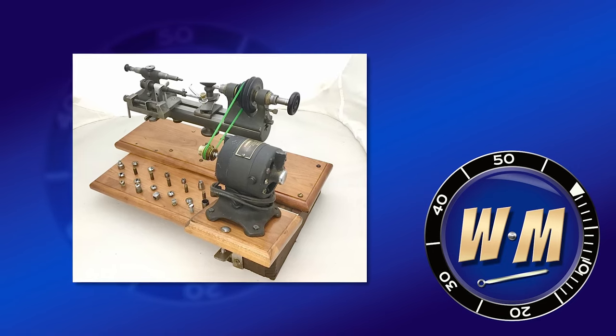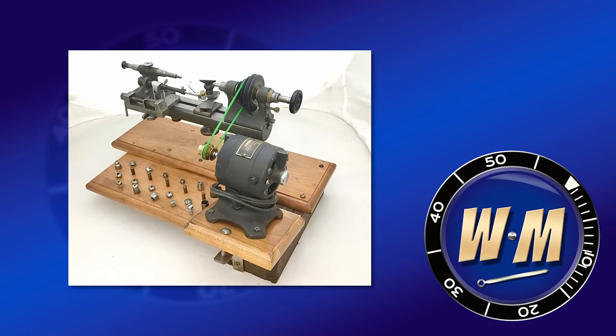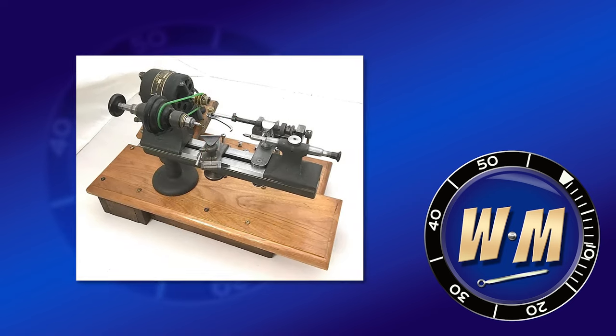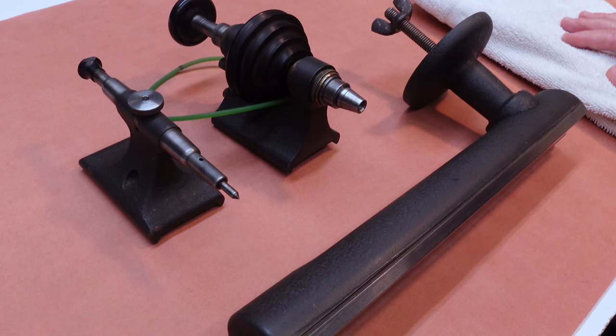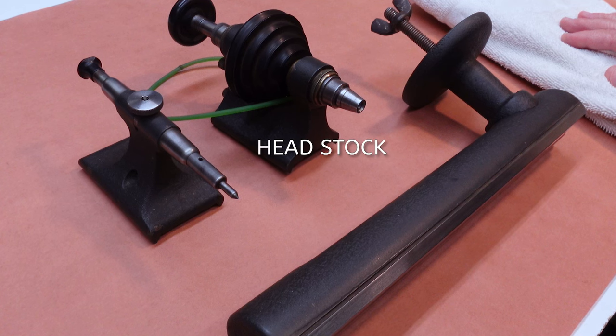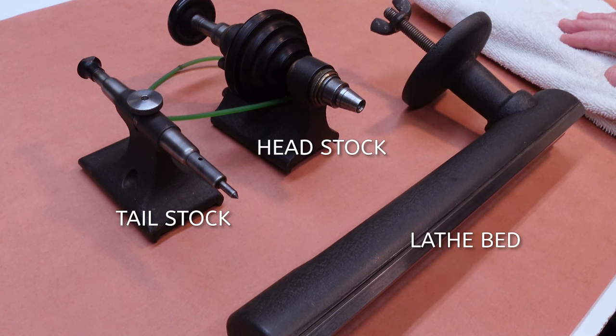In this video, we will be disassembling, cleaning, and reassembling an Elson USA-made watchmaker's lathe. The three main parts of a watchmaking lathe are the headstock, the tailstock, and the lathe bed.